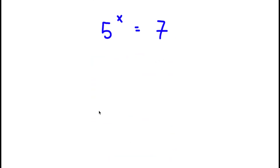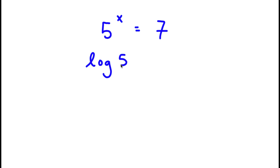In this problem, I have 5 to the power of x is equal to 7. The first thing I'm going to do is take the log on both sides. So now I have log of 5 to the power of x is equal to log 7.